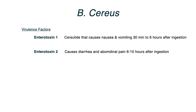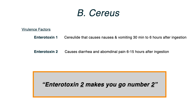Enterotoxin 2 causes diarrhea and abdominal pain, and that happens about 6 to 15 hours after ingestion. Differentiating Enterotoxin 1 from 2 is somewhat simple — just remember that Enterotoxin 2 makes you go number 2, so number 2 is associated with diarrhea, and number 1 is just nausea and vomiting.